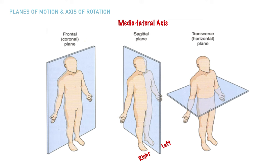In the sagittal plane, which divides the body into right and left portions, all of the osteokinematic movements within this plane are possible because of some type of rotation around this plane's axis. This axis runs perpendicular to the plane itself, and for the sagittal plane we have what's called the medial-lateral axis. We call it this because it runs from the midline, or the medial portion of the body, towards the lateral sides of the body.